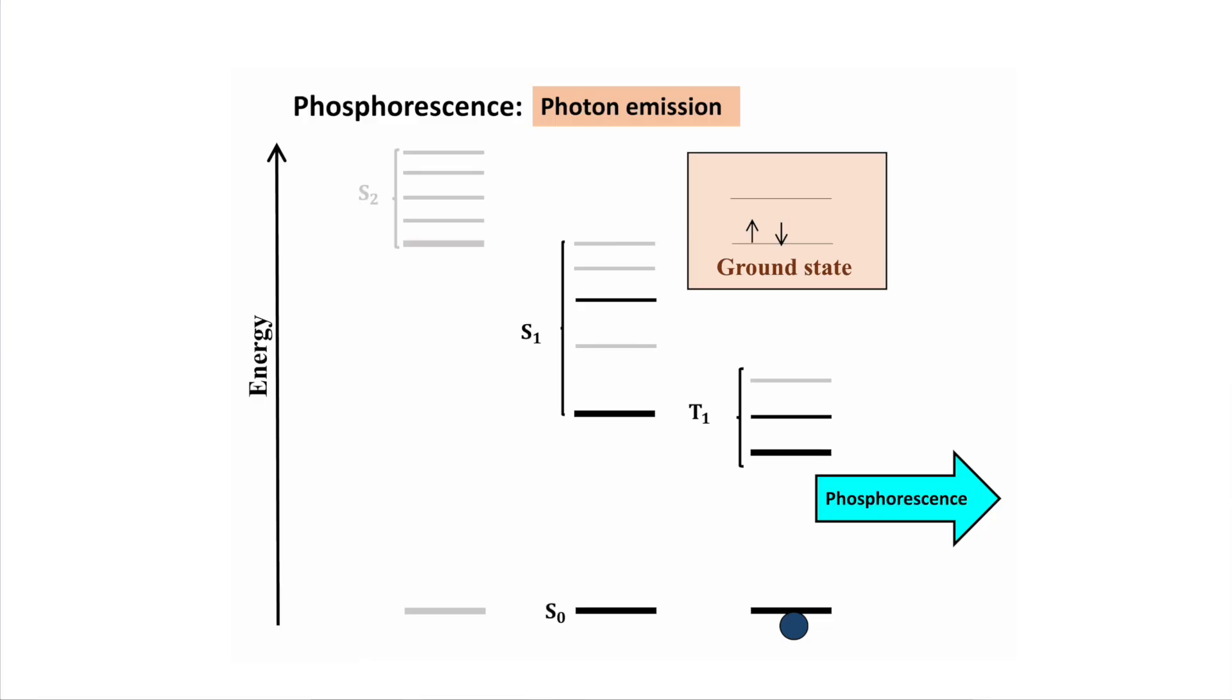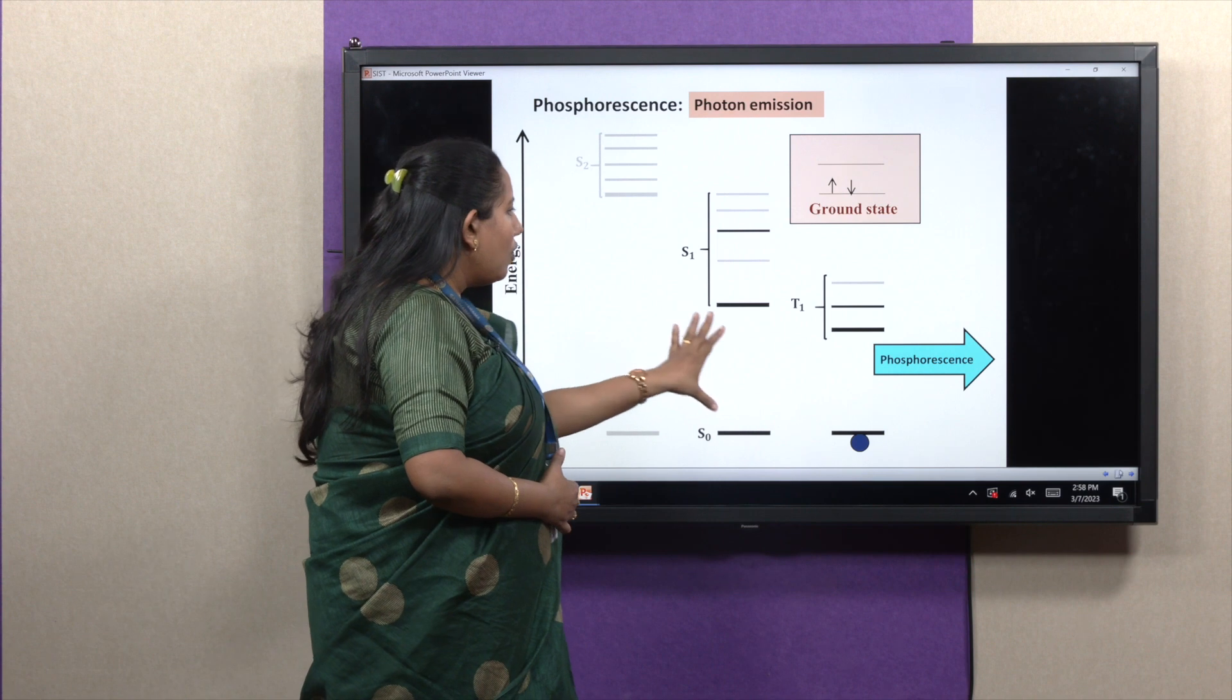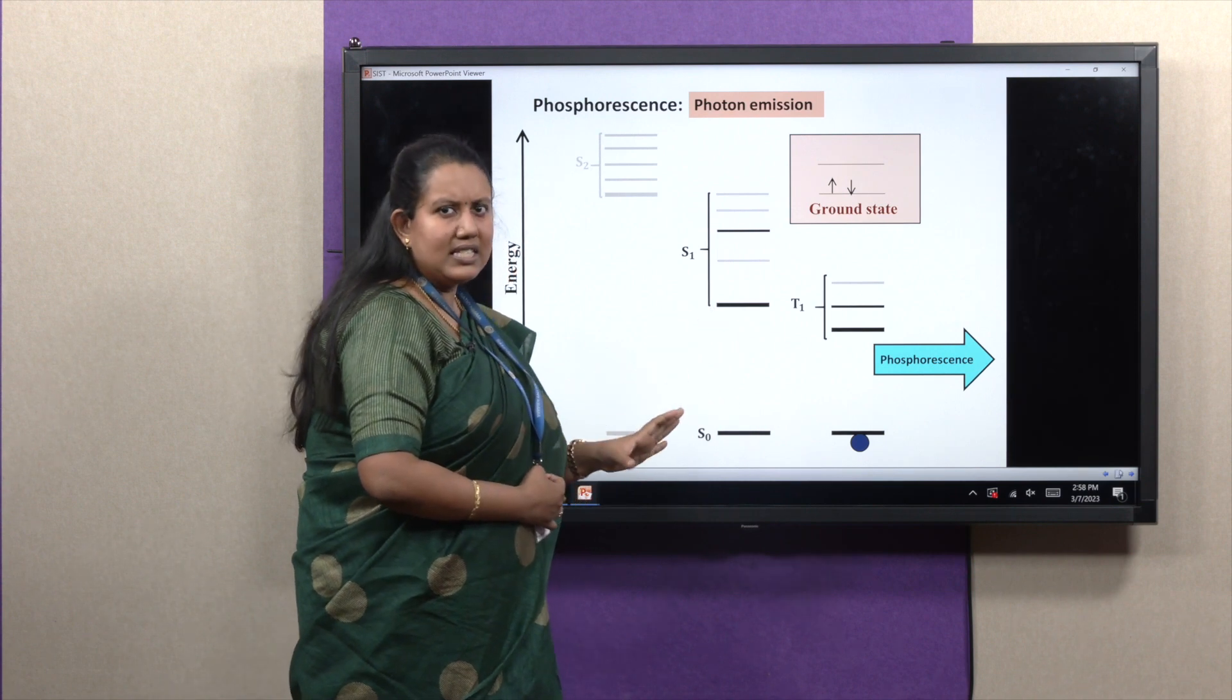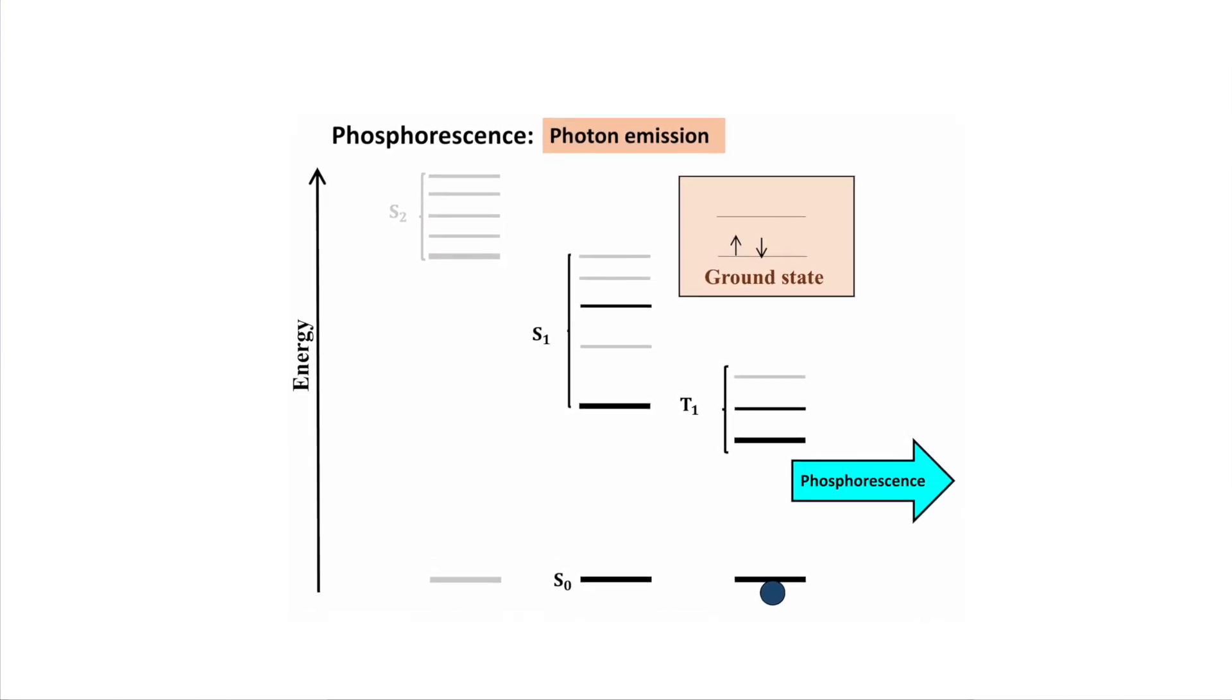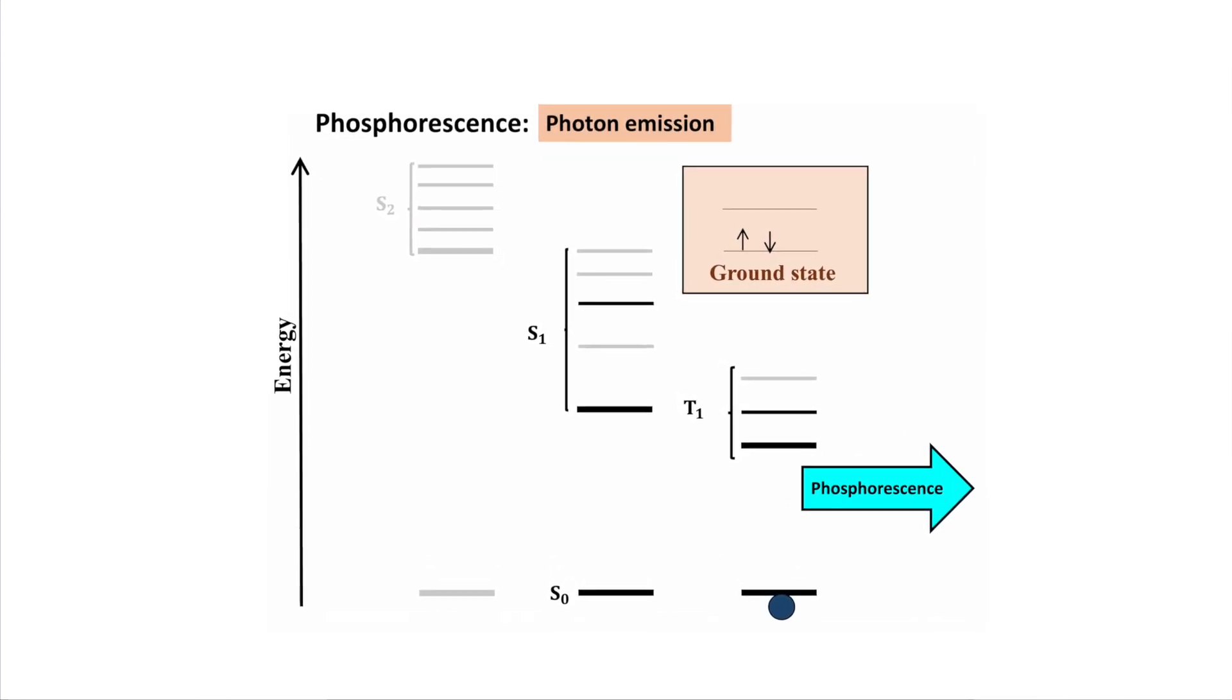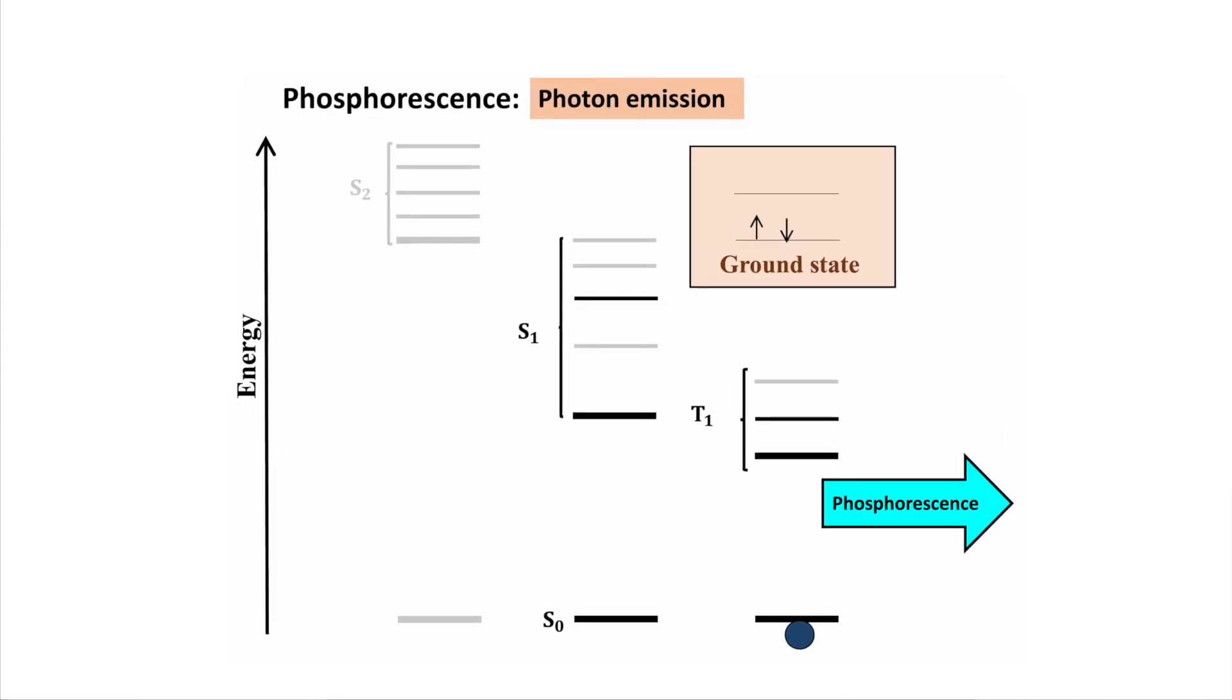And fluorescence lifetime is less compared to phosphorescence. Fluorescence lifetime is generally in nanosecond range, in the range of 10 to the power minus 9 to 10 to the power minus 7 seconds.